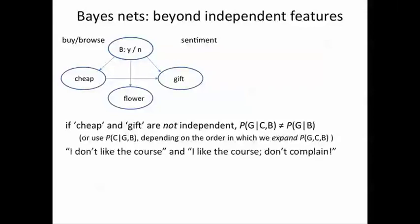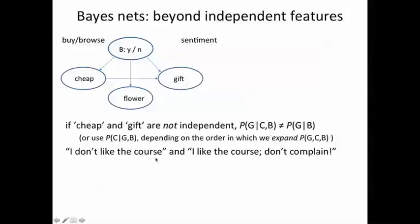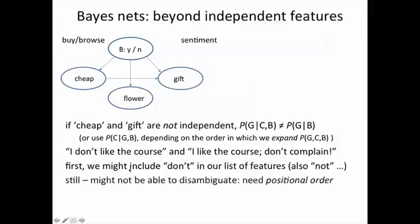Another example could be the sentiment from comments. A comment like, I don't like the course and I like the course, don't complain. Both contain the word don't and like but they are clearly different sentiments. So at first we might include don't in our list of features along with other negatives like not. But that doesn't quite do the work because we also need to deal with the positional order in which these words occur. Just including negatives doesn't allow us to disambiguate between I don't like the course and I like the course don't complain.